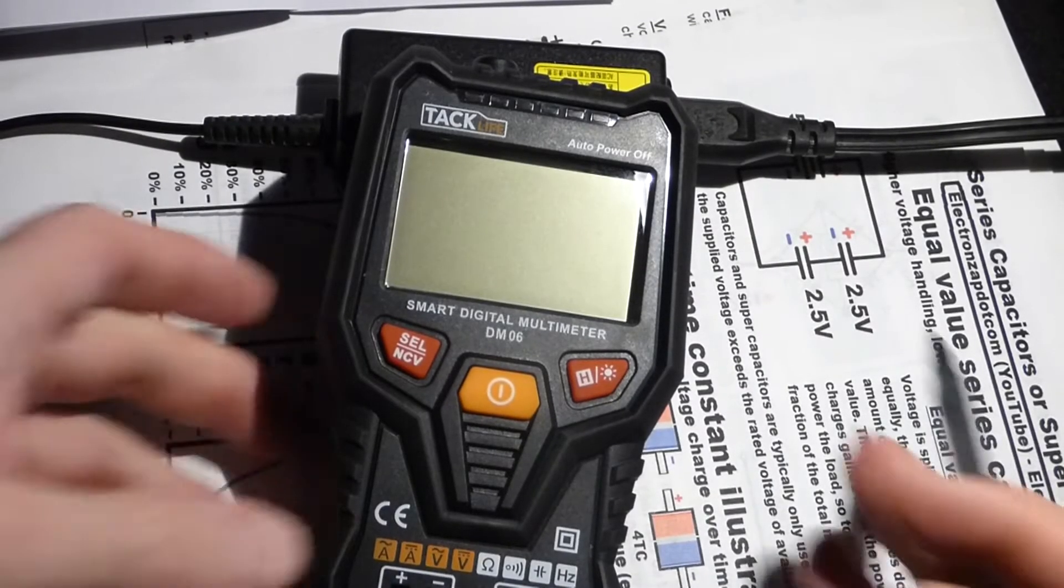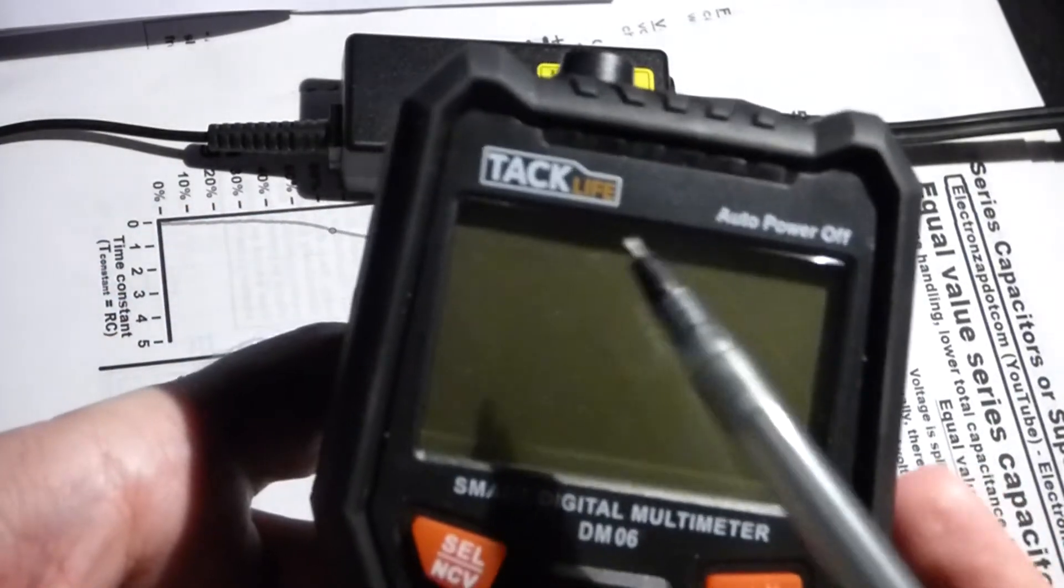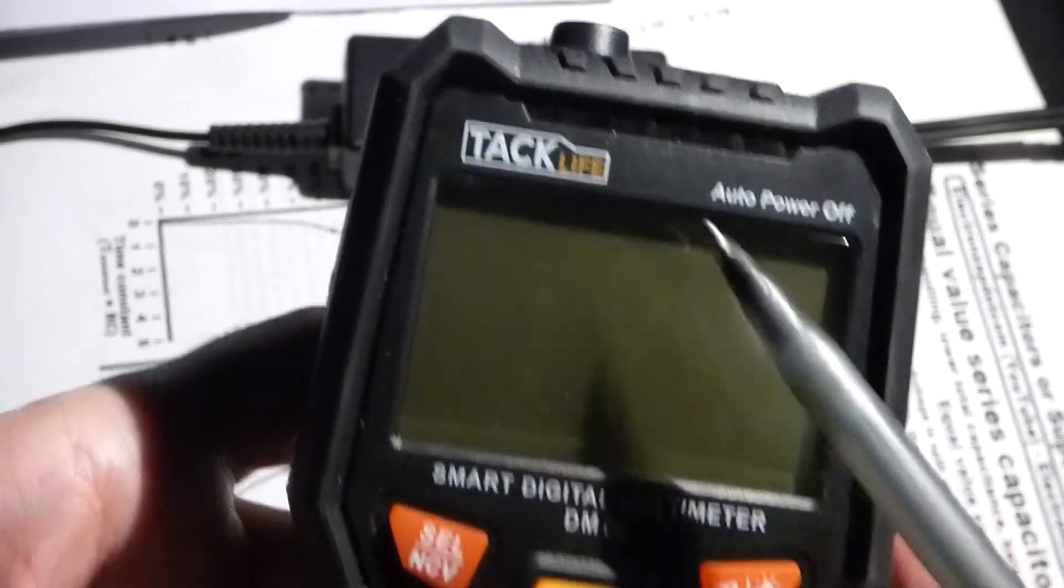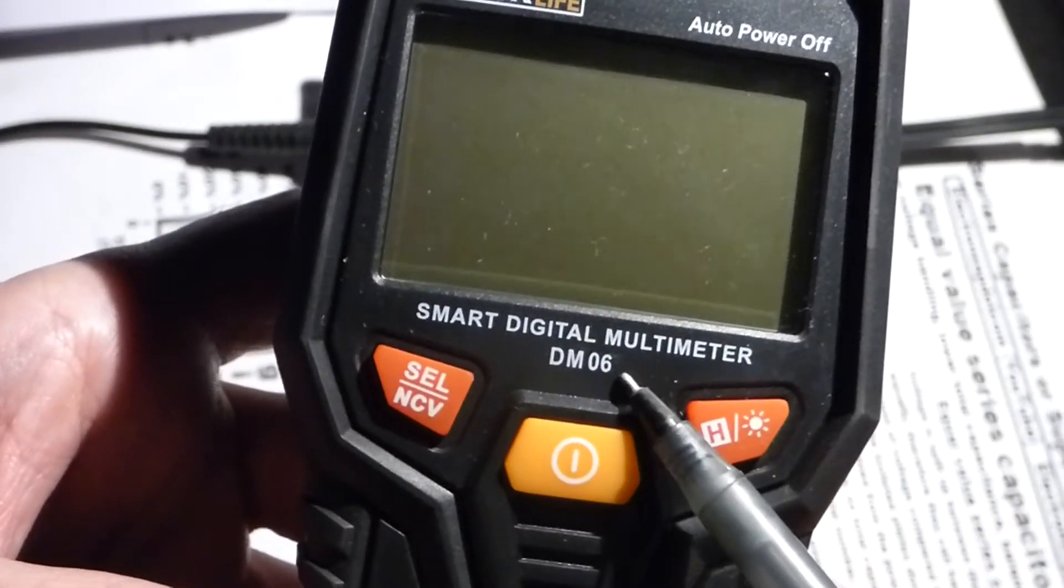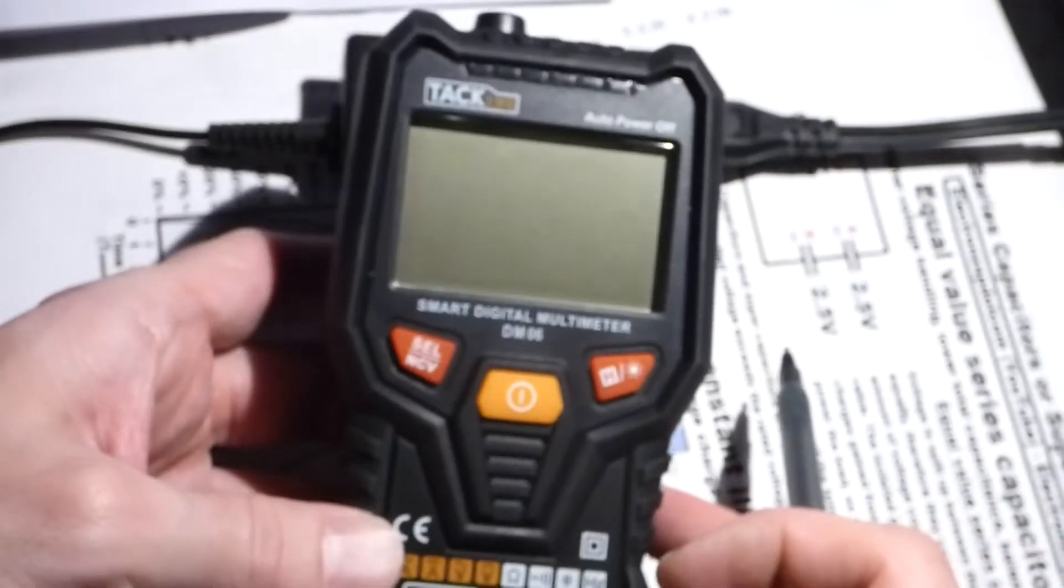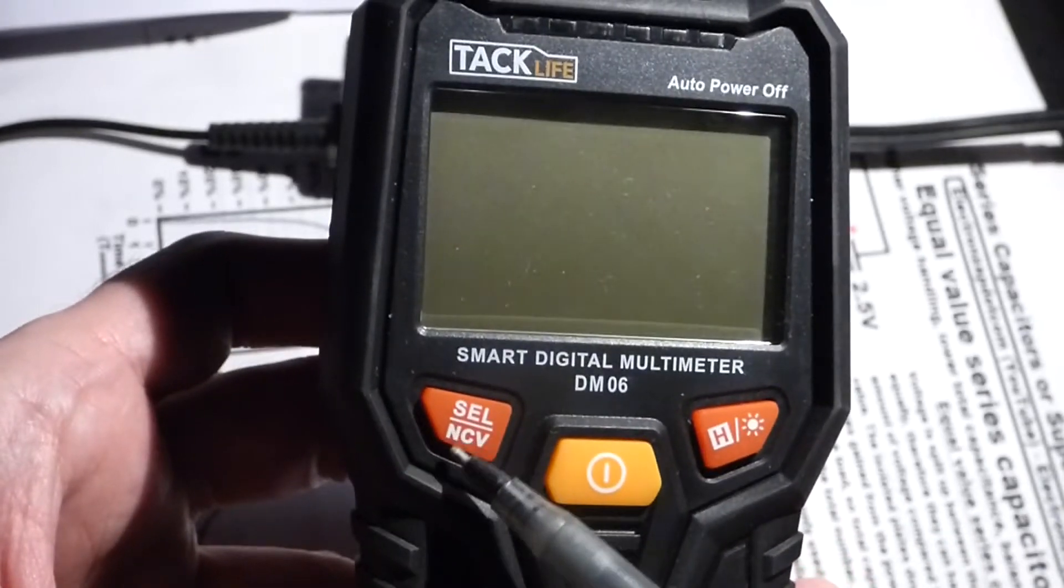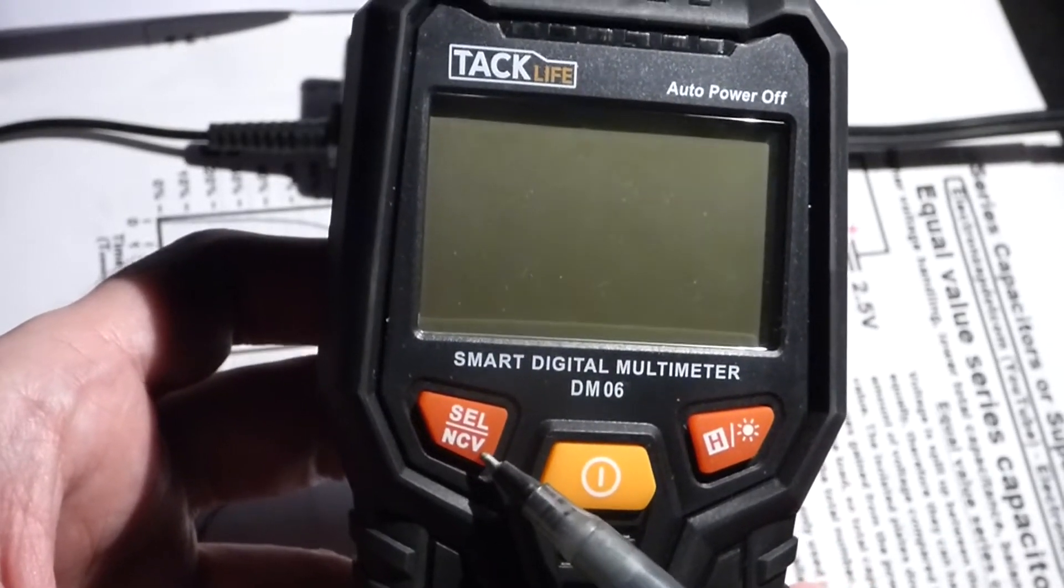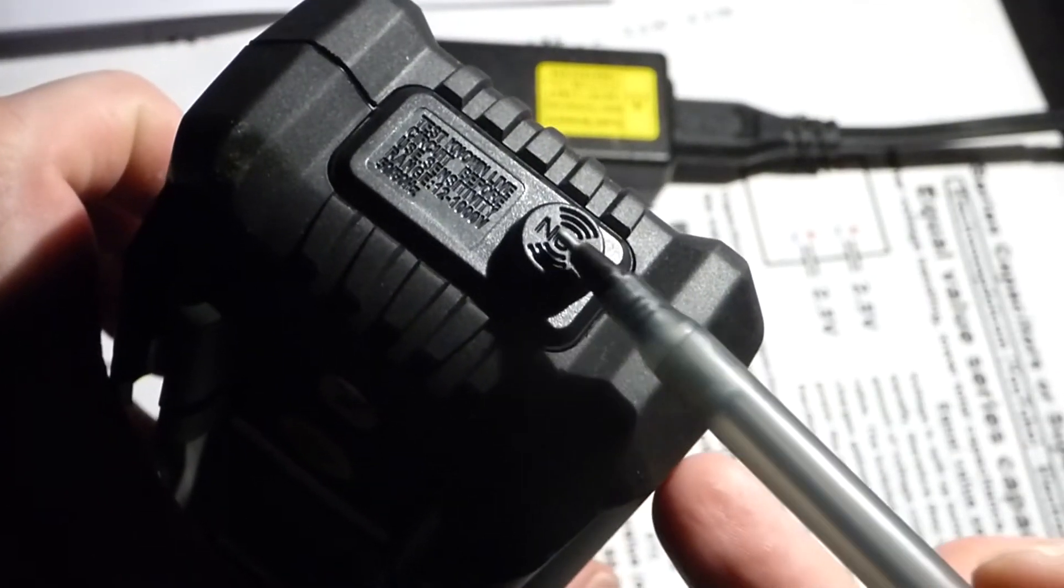So now in today's video we're going to take another look at my new multimeter. This is the TacLife DM-06 and in this video we're going to look at the non-contact voltage detector. On top of the meter we have this probe here.